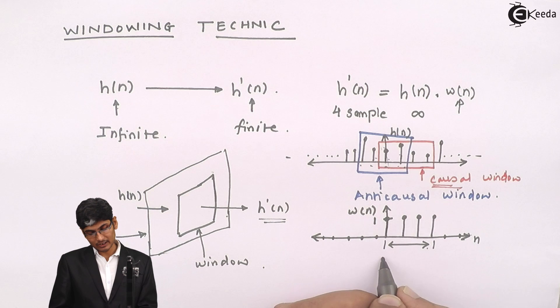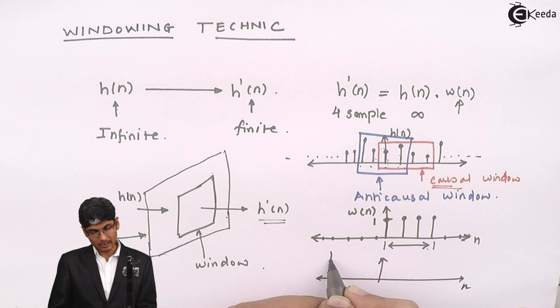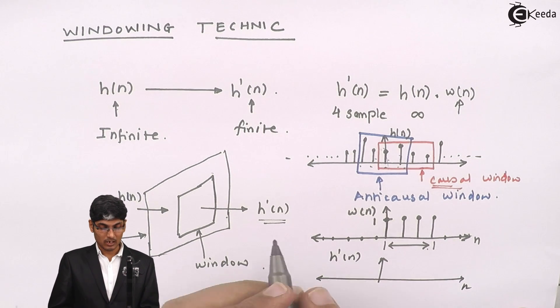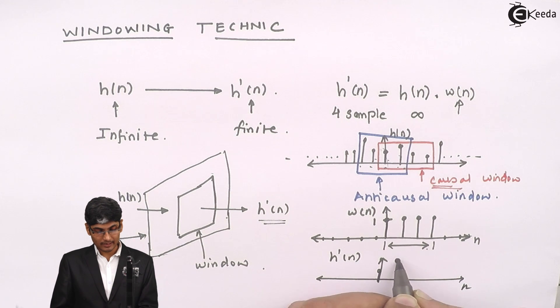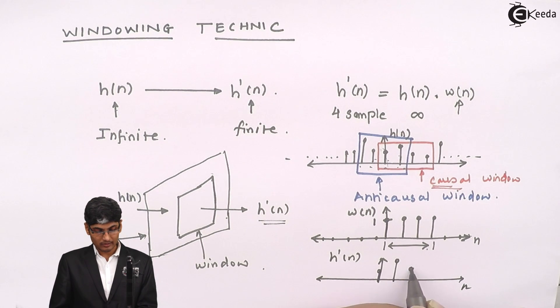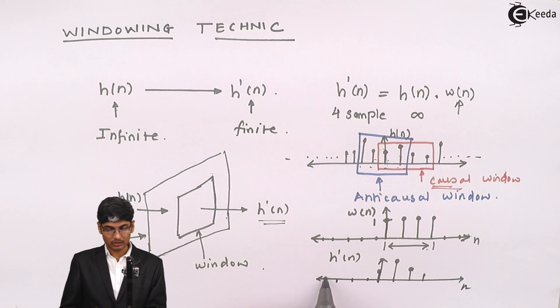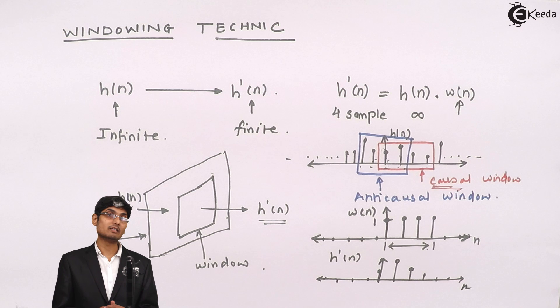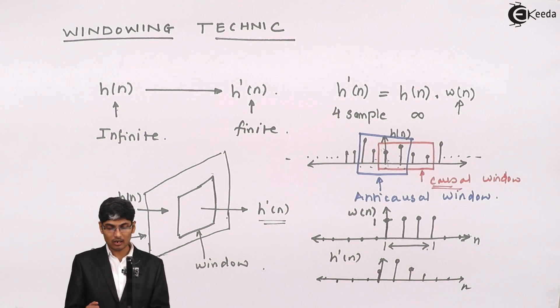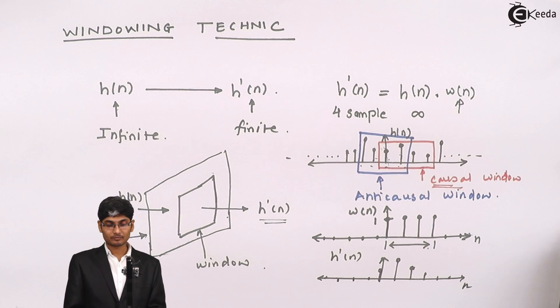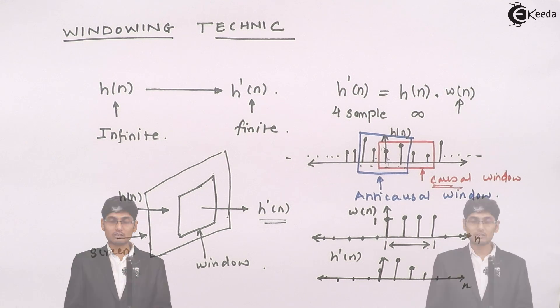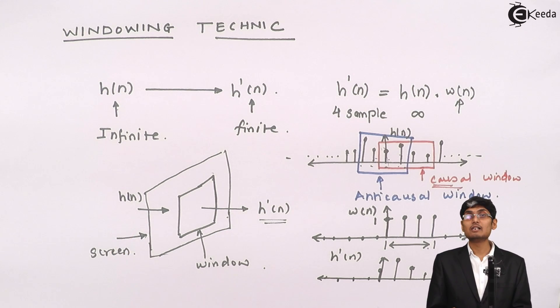I will get the final h dash of n as, this will be my n and this will be my h dash of n, will be first sample, then the second sample, then the third sample and the fourth sample that is all, rest all the samples will turn to 0 which can be easily neglected. This is how we designed a filter or we designed an FIR system using windowing technique.